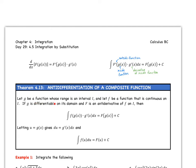So if g is a function whose range is on interval I, and f is a function that is continuous on that interval, if g is differentiable on its domain, and F is an anti-derivative of little f on that interval, then we can say that the integral of f of g of x times g prime of x is equal to big F of g of x plus c. So what we're going to do is let u be g of x, this inside function. Then du is the derivative of that, and this gives us our substitution. It's going to make a lot more sense when we go through some examples.